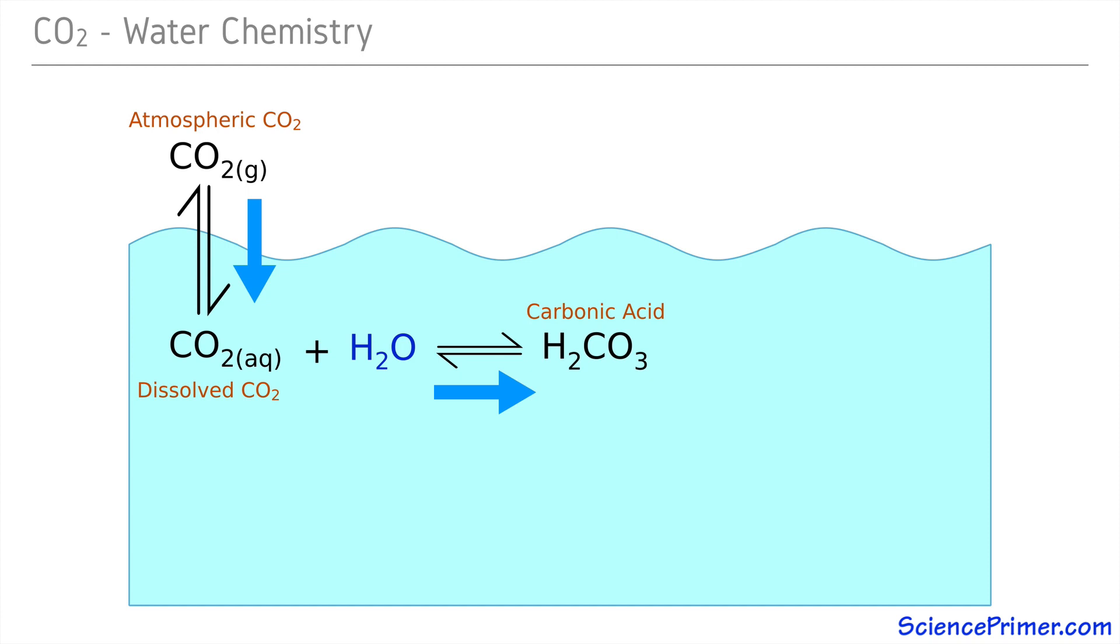As an acid, by definition, carbonic acid releases hydrogen ions into the solution. It does this by dissociating into negative bicarbonate ions and positive hydrogen ions. These hydrogen ions contribute to the overall hydrogen ion concentration in the oceans, decreasing the ocean's pH.